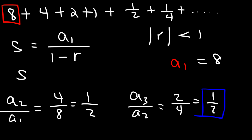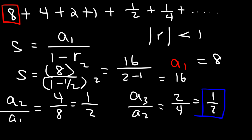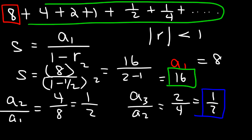So now let's finish this problem. a sub 1 is 8, and r is 1 half. Multiplying the top and the bottom by 2, this is going to be 16 over 2 minus 1, which is equal to 16. So that's the sum of this infinite geometric series.